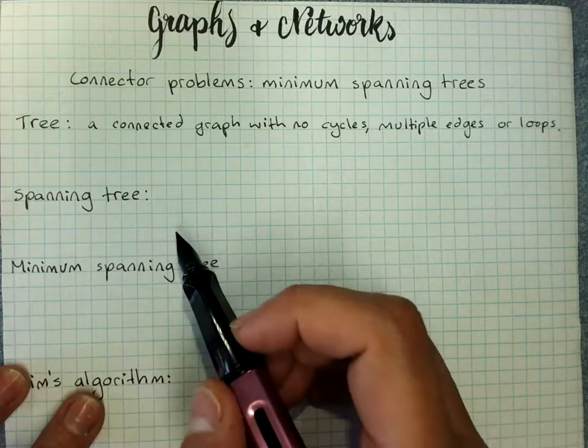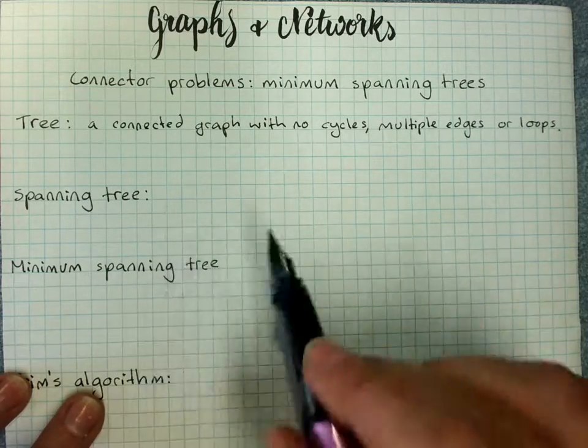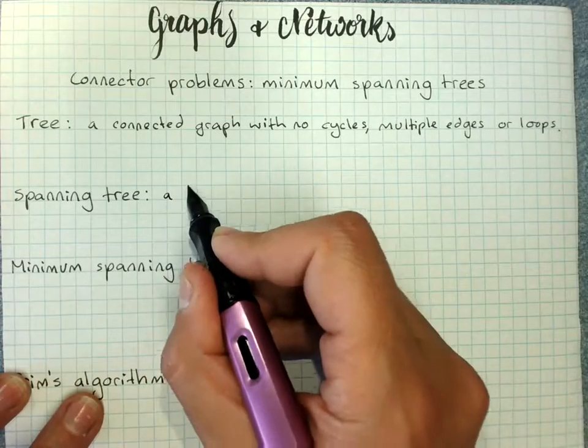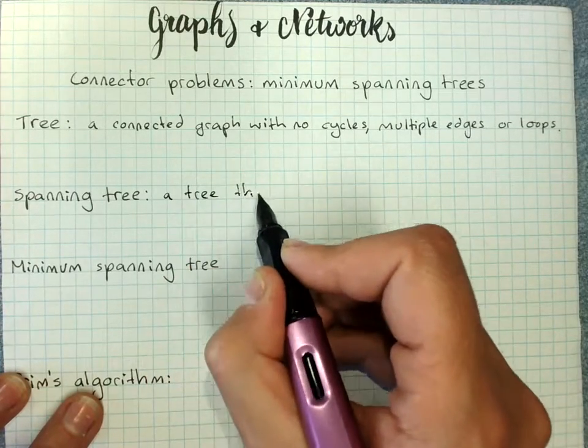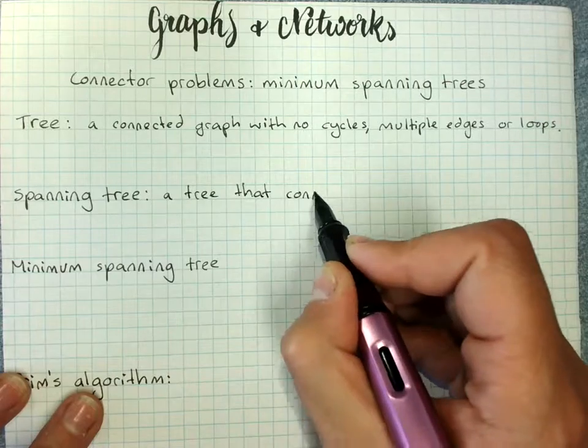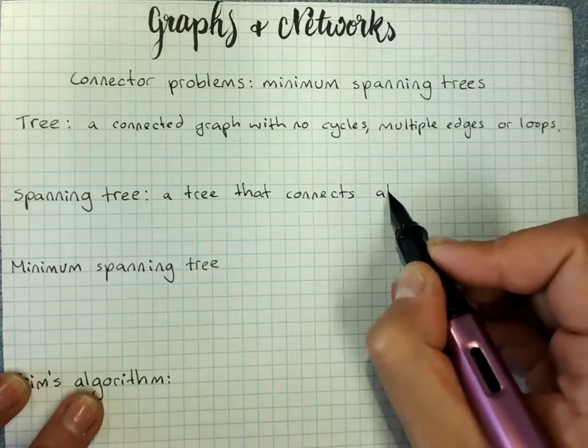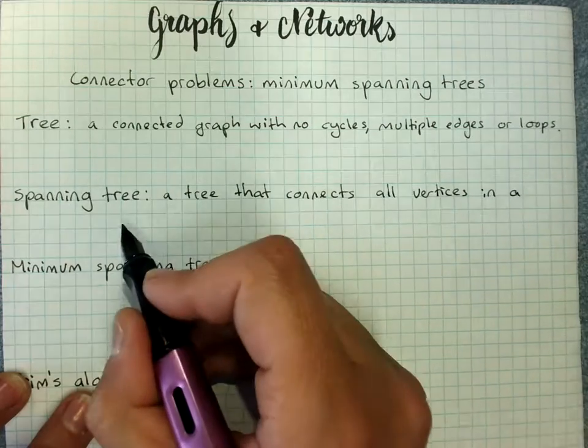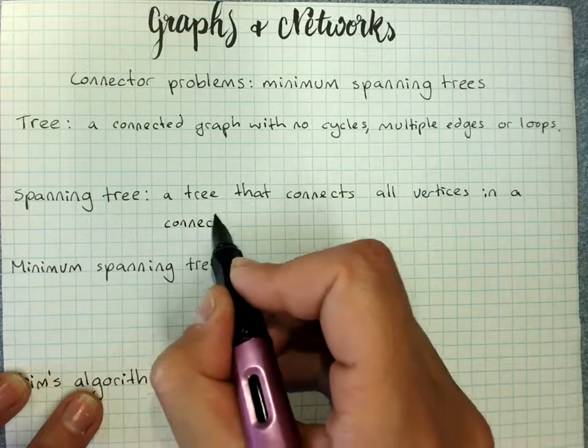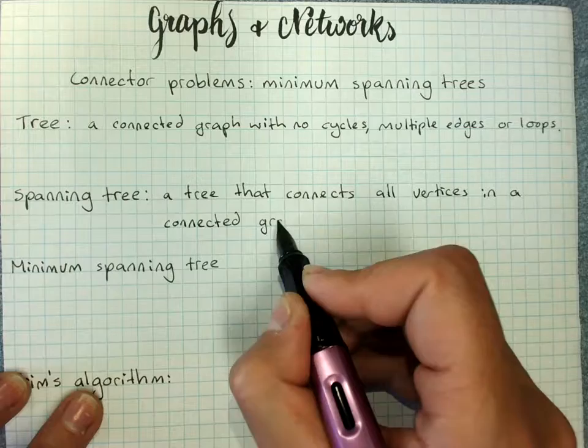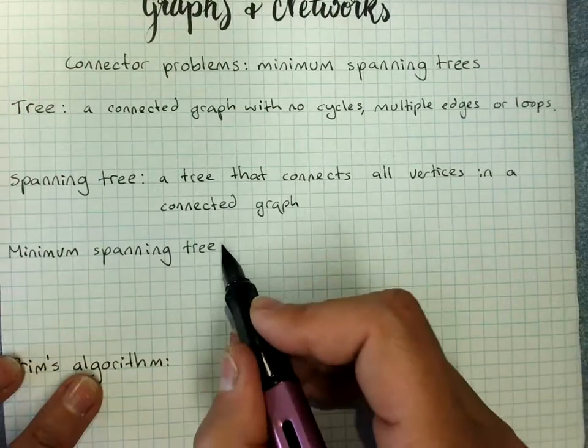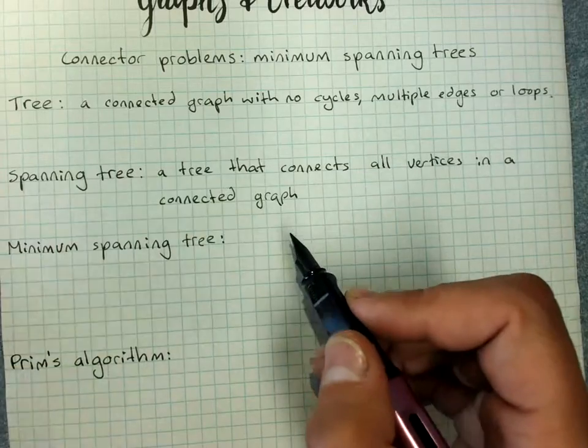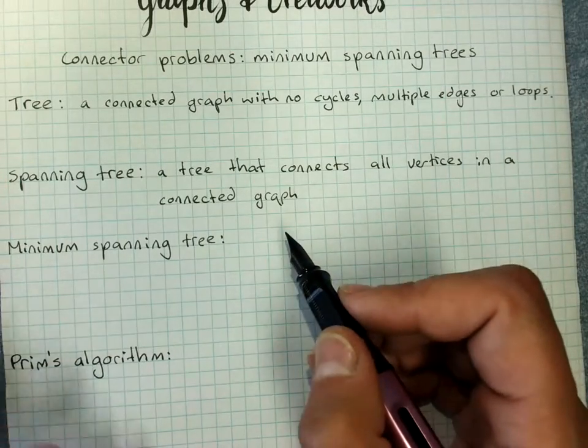A spanning tree connects all of the vertices in a connected graph. And a minimum spanning tree does that in the minimum possible distance.